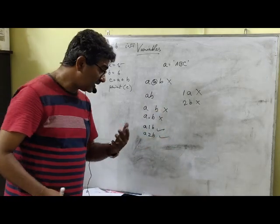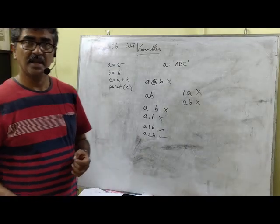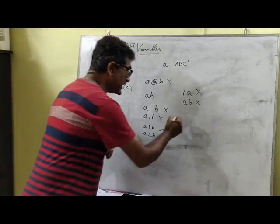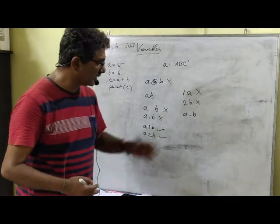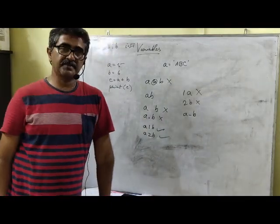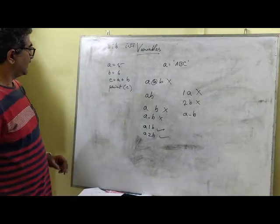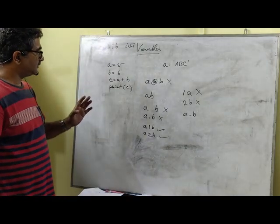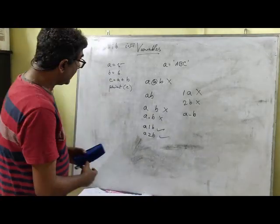Similarly, the only special character which is allowed is the underscore. You may use underscore. You may use A underscore B. That is possible. But you cannot use any other special character for variables. Remember that.